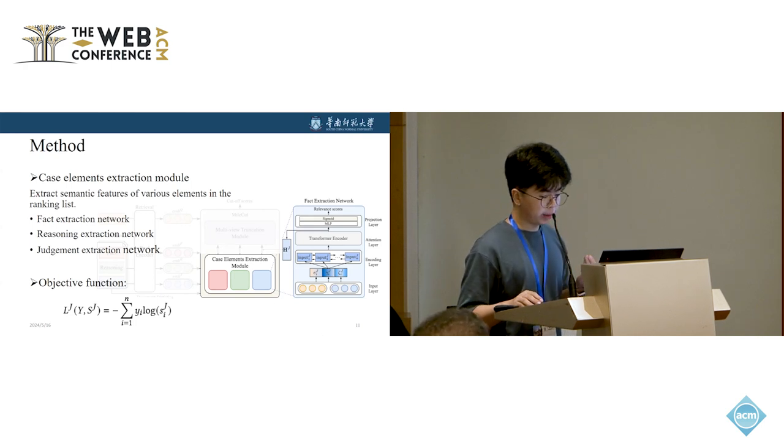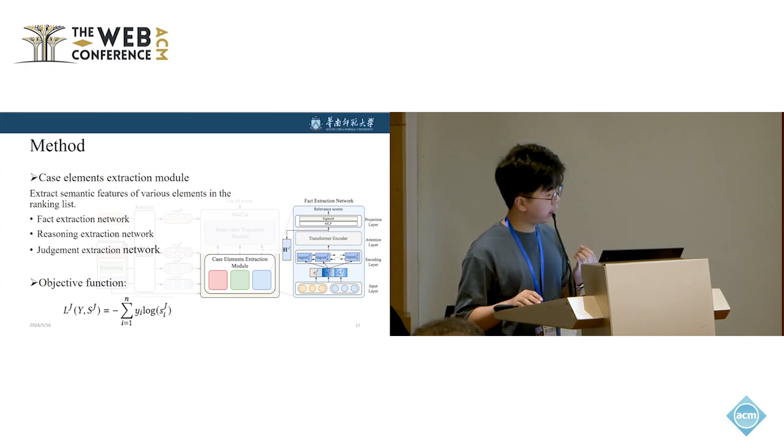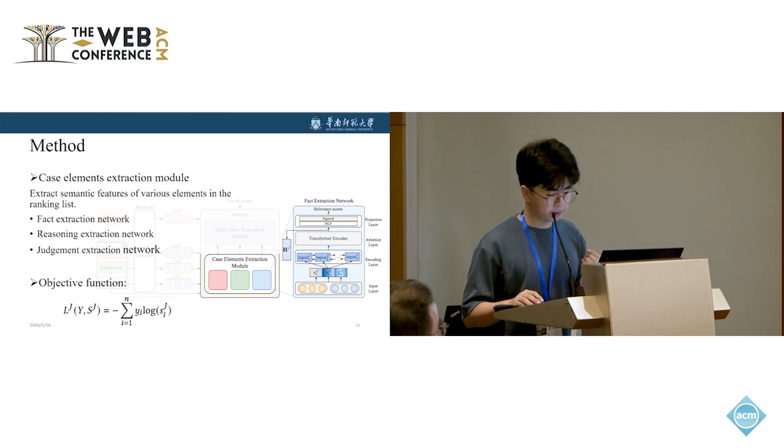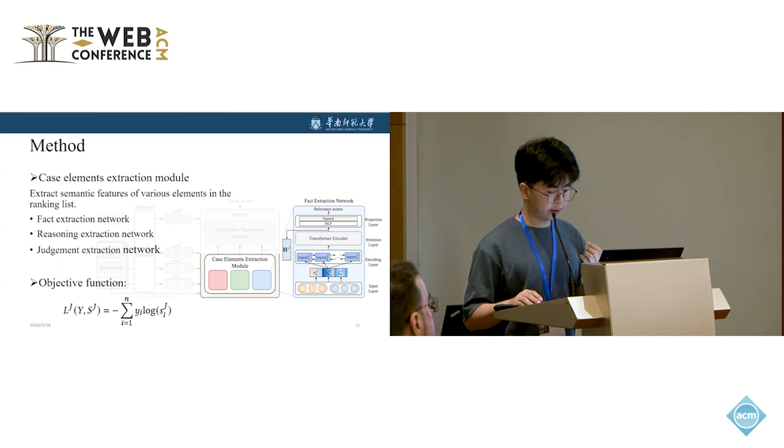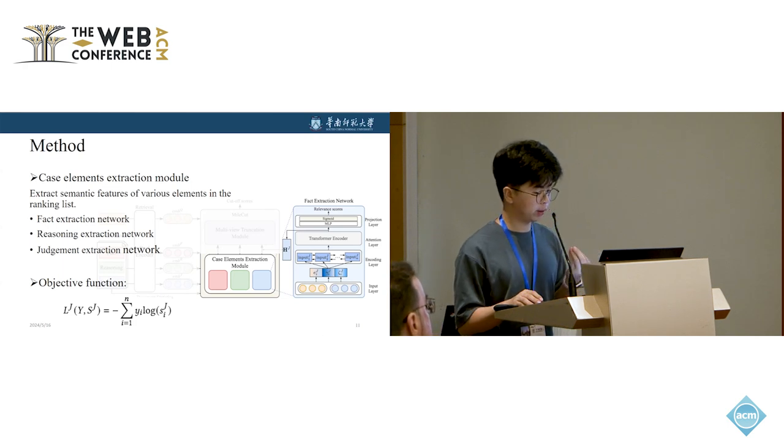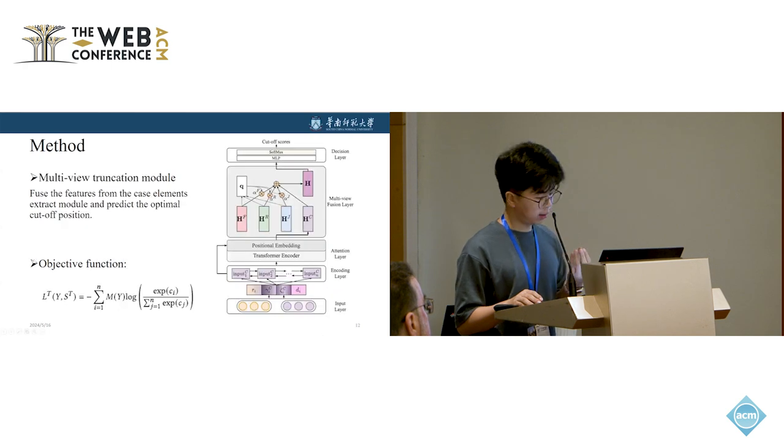The input layer takes the element-level semantic representation as inputs. We employ a BiLSTM as the encoding layer and transformer encoder as the attention layer. The output of the attention layer is used to predict the relevance and deliver the element-level feature to the next model, which is the multi-view truncation model.